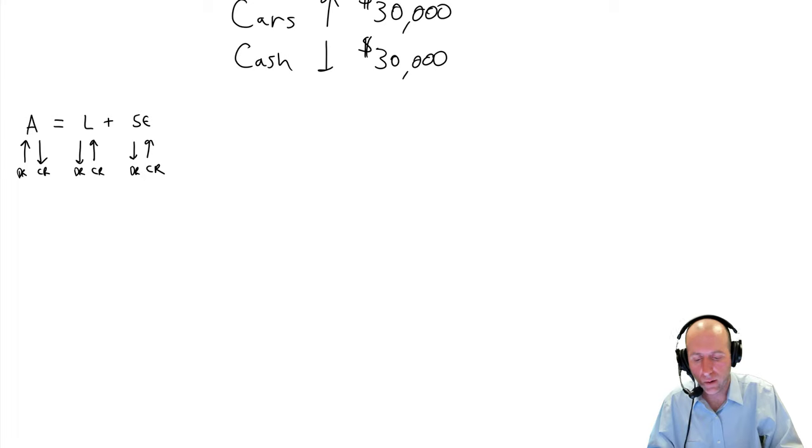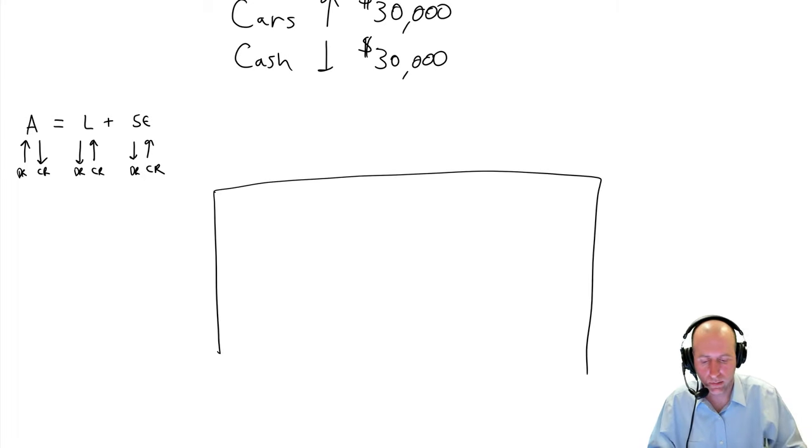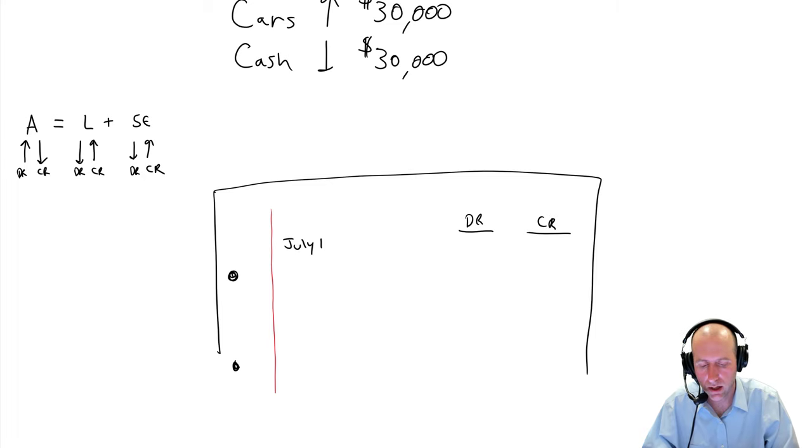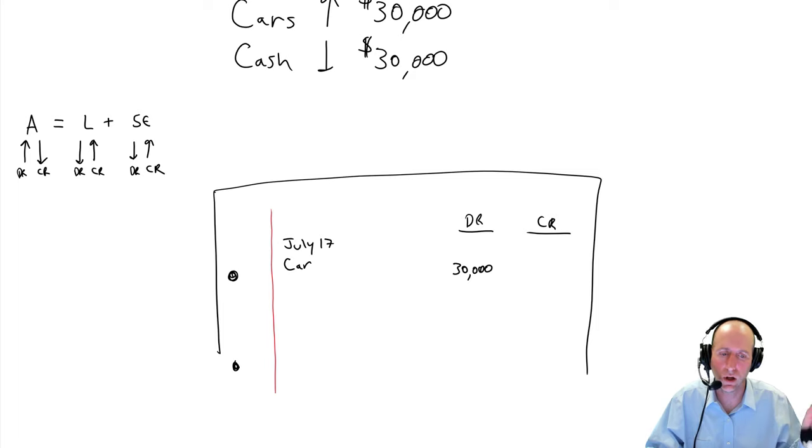So, let's debit our car. If I were a student and I had a spiral notebook with hole punches on the side, at the top of the page, I would write DR with an underline and then CR with an underline. Then below, I would write the date. So, today's date is July 17th. So, I would write July 17th. What happened on July 17th? I bought a car and I've just said I want to debit that car. So, on the left side, sort of close to the margin here, I'm going to write the word car. And under the DR, I'm going to write $30,000. That's saying I'm debiting my car by $30,000.